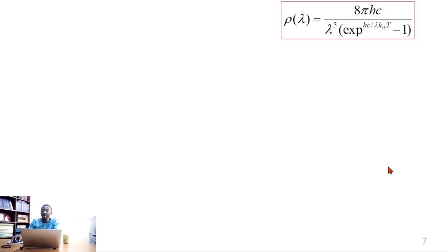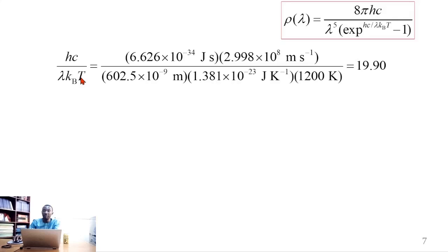So to make our lives a bit easier, we pick this bit of the equation, h times c all over lambda times Boltzmann's constant times temperature. We evaluate it separately. So we substitute the value for h, value for speed of light, the median wavelength, the Boltzmann's constant, and then the temperature. And that gives 19.90.